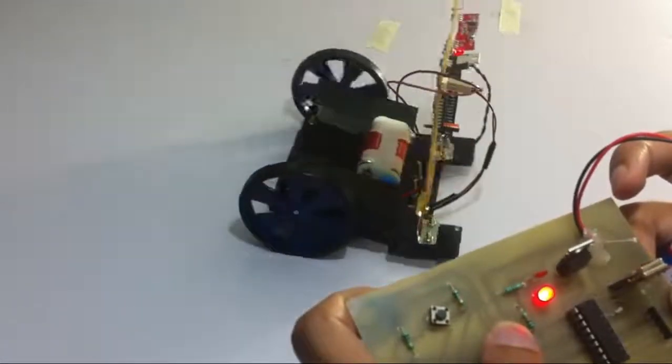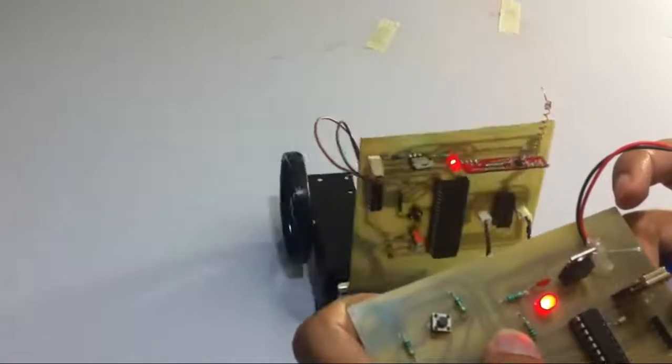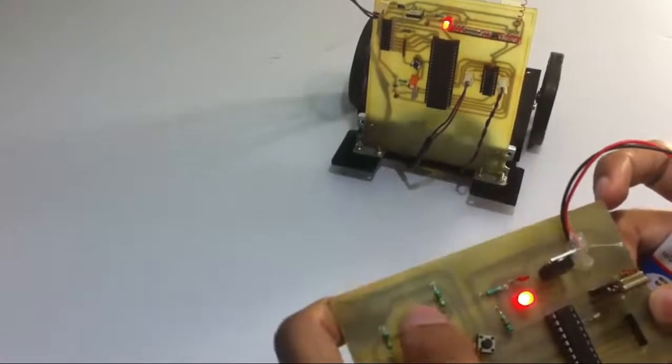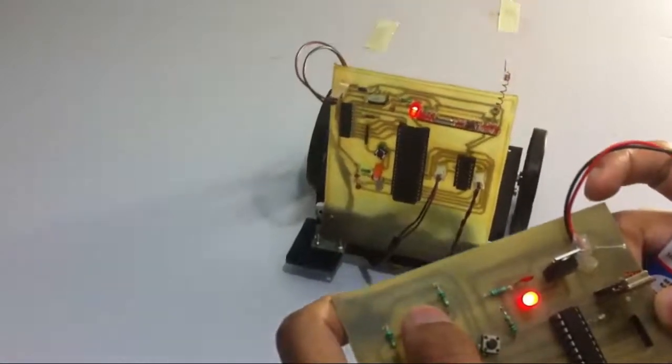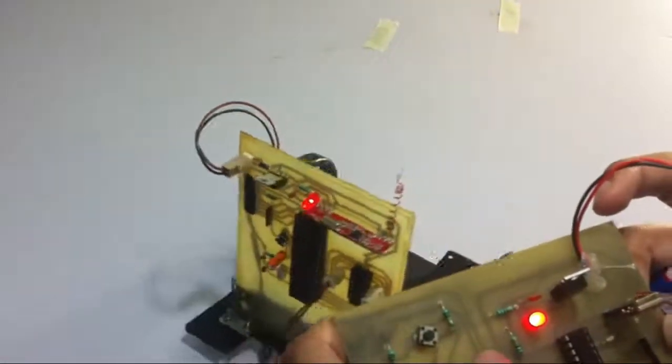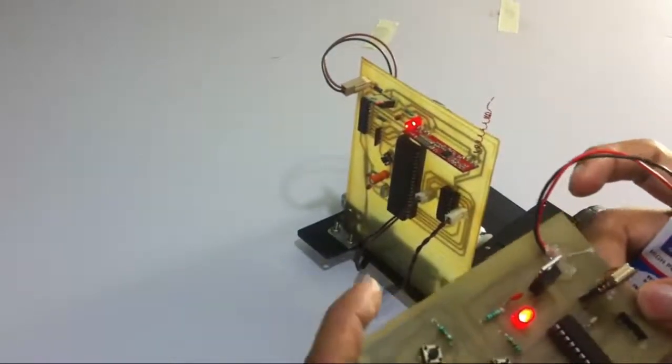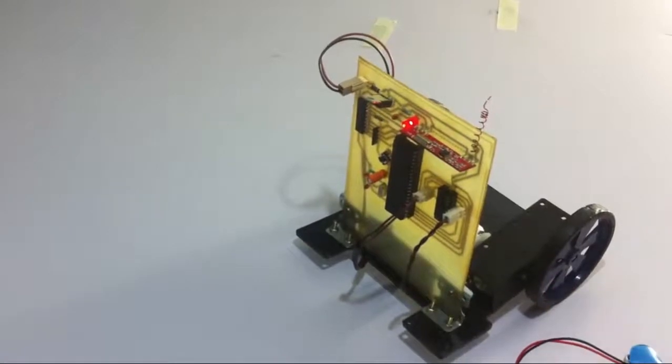So this is how the RF controlled robotic vehicle can be moved as per user provided directions through this RF remote as and when needed. So this is how RF controlled robotic vehicle project works. Thank you.